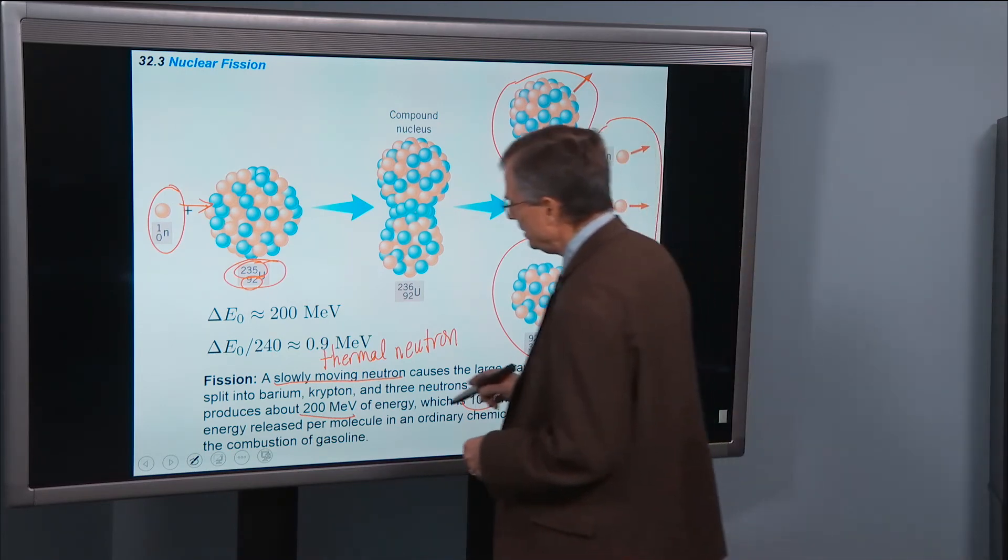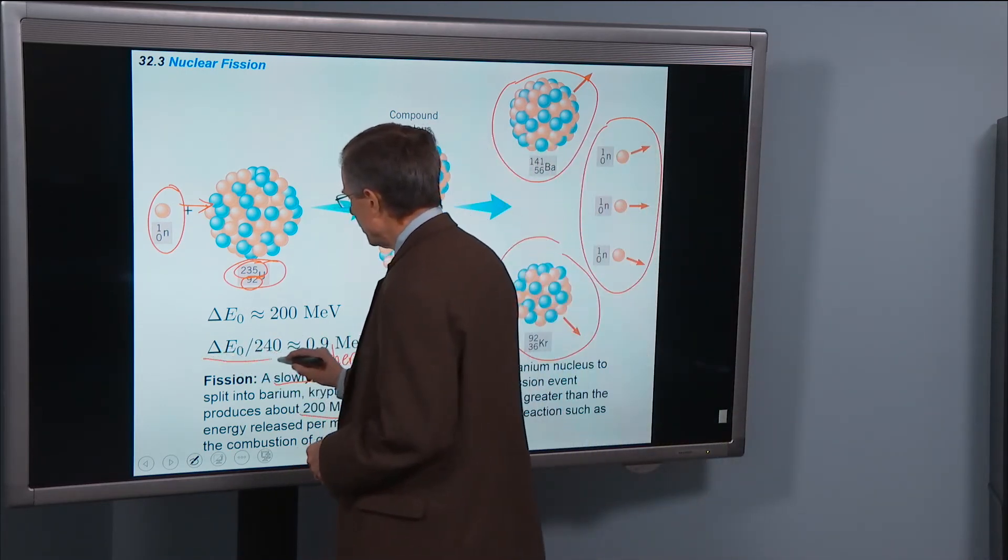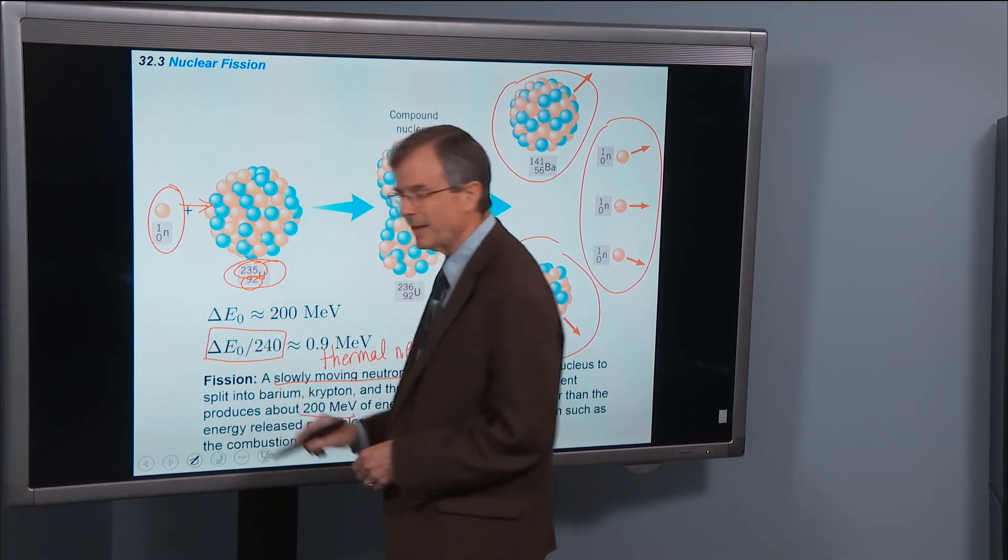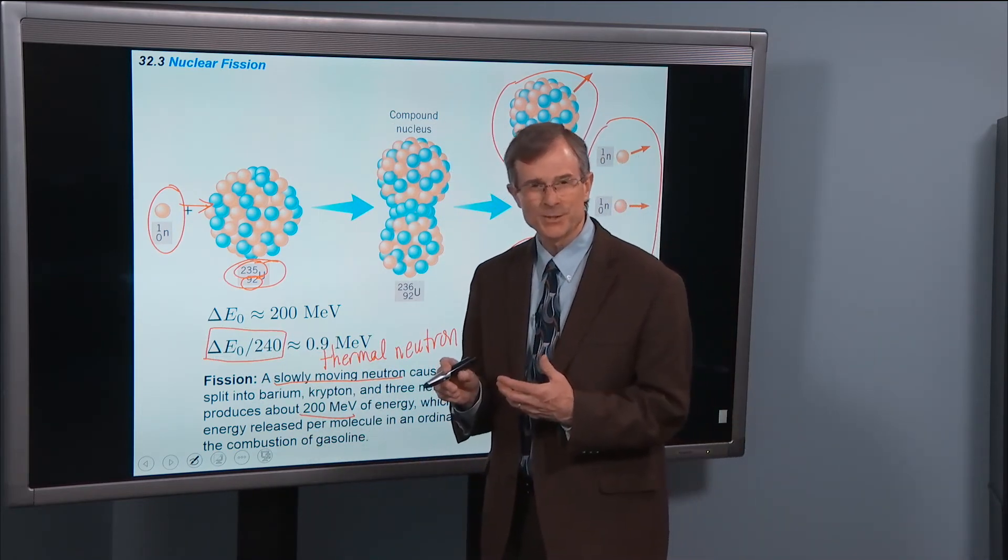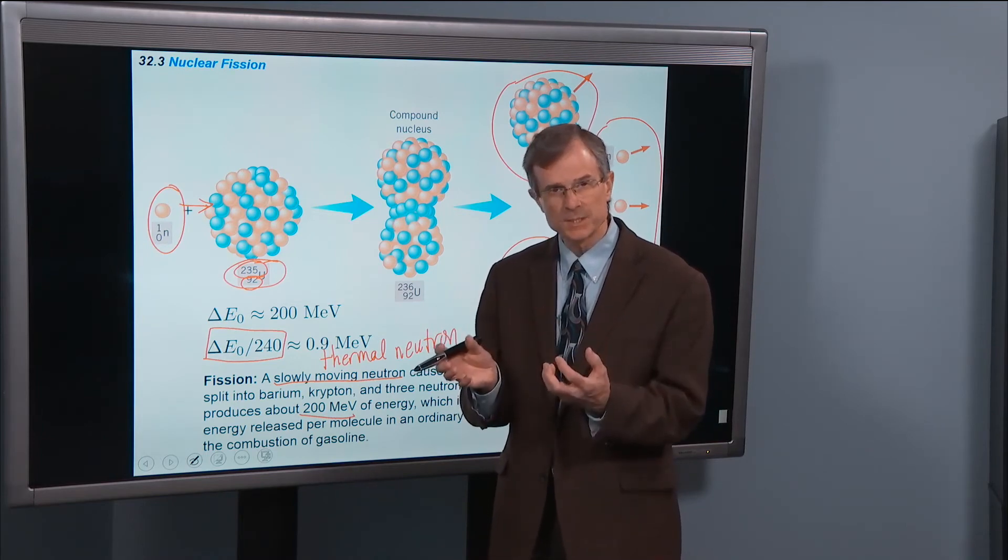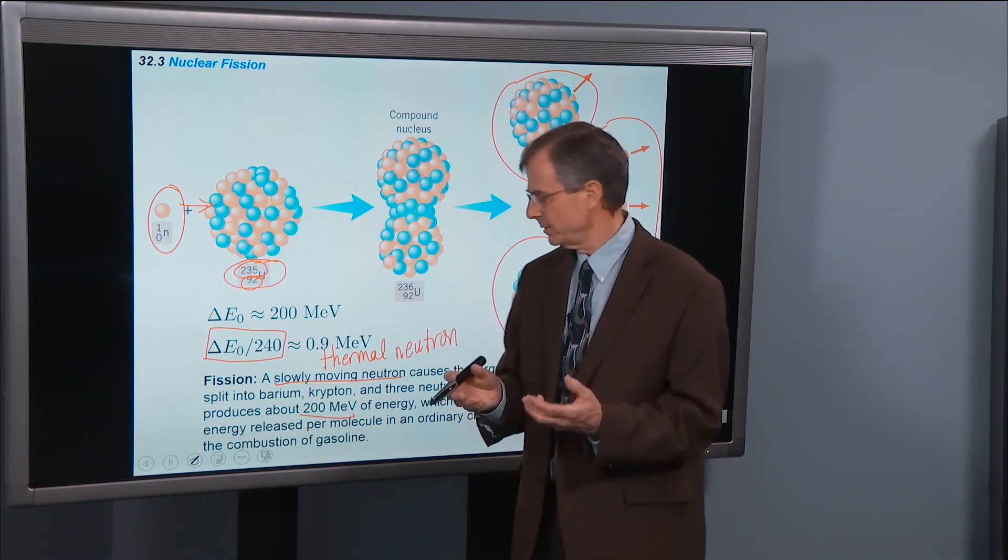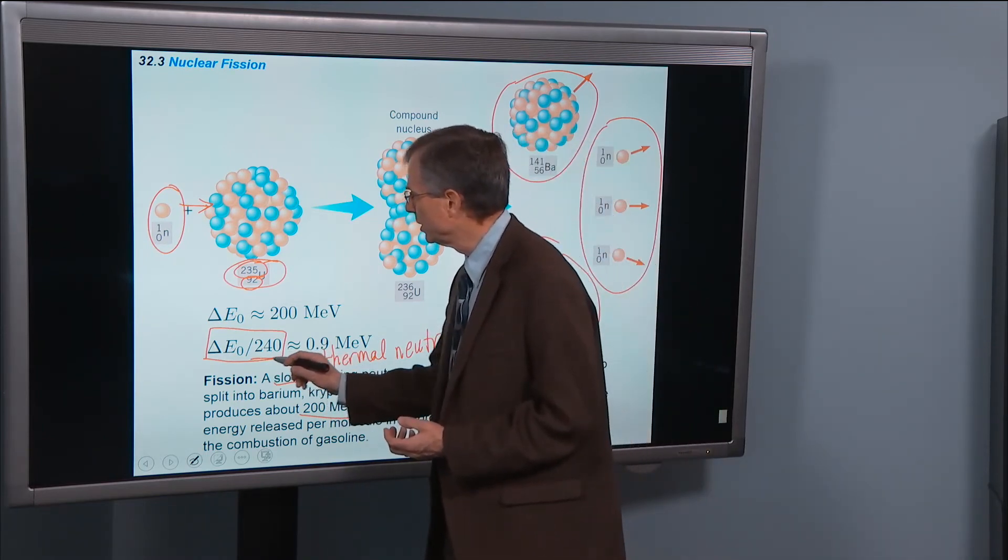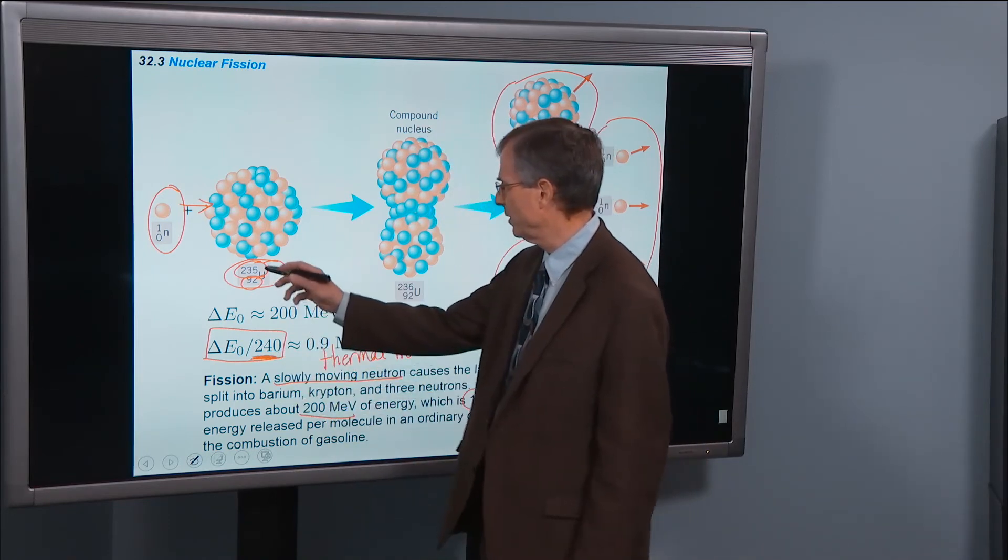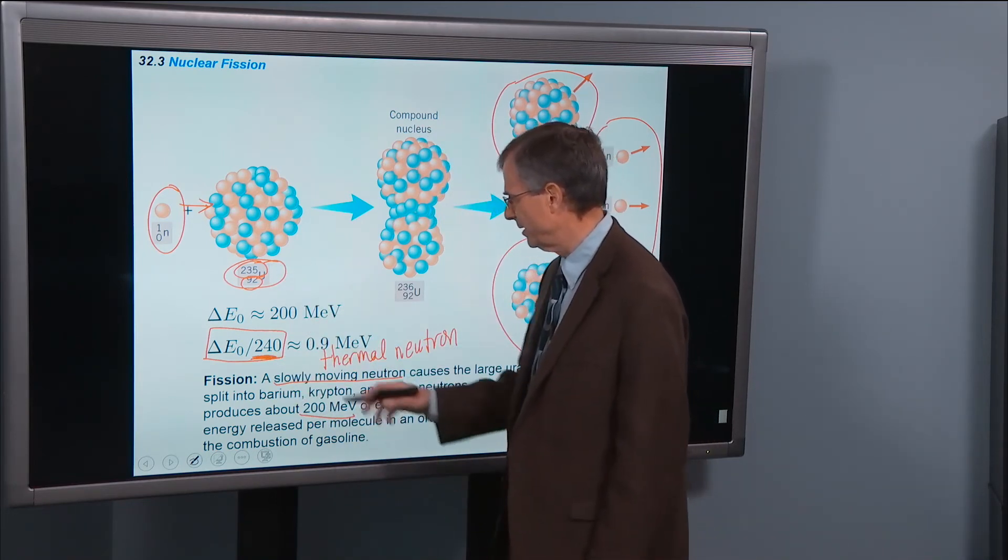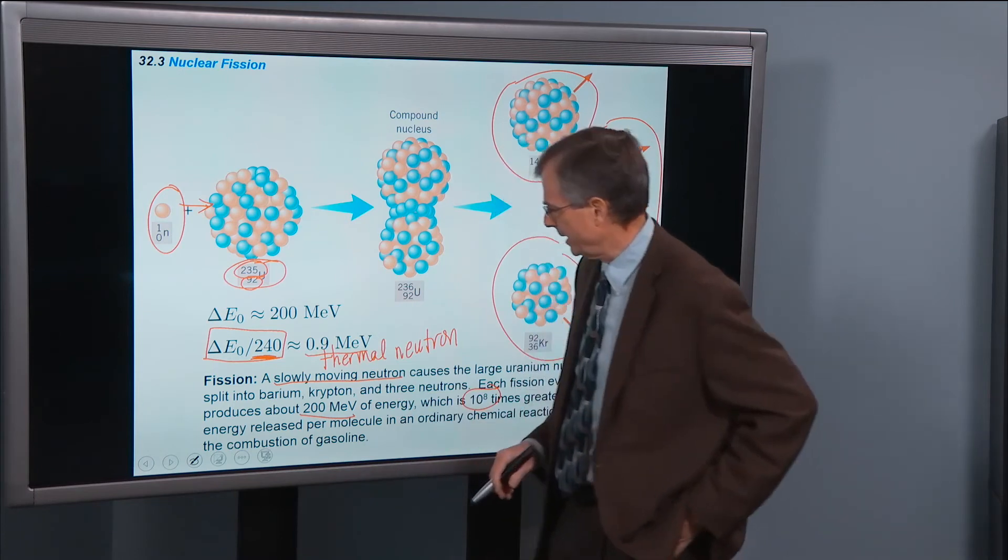This is the amount of energy per nucleon, so this is not a binding energy like we talked about in the last chapter, but the amount of energy released by this nuclear reaction per nucleon, roughly 240 divided by 235 here, is 0.9 MeV.